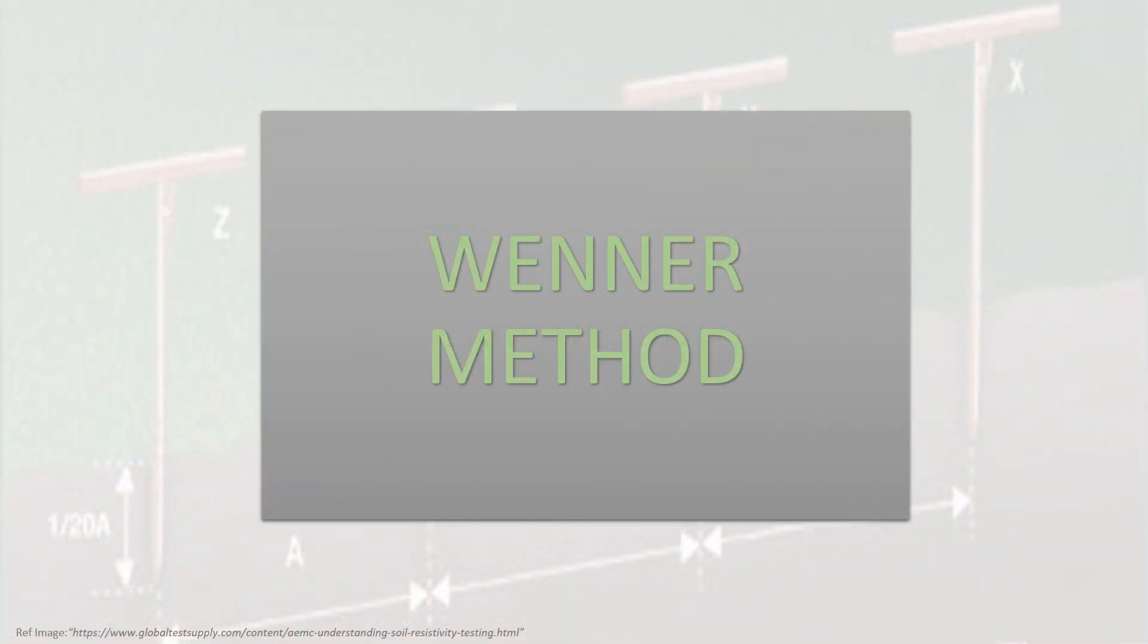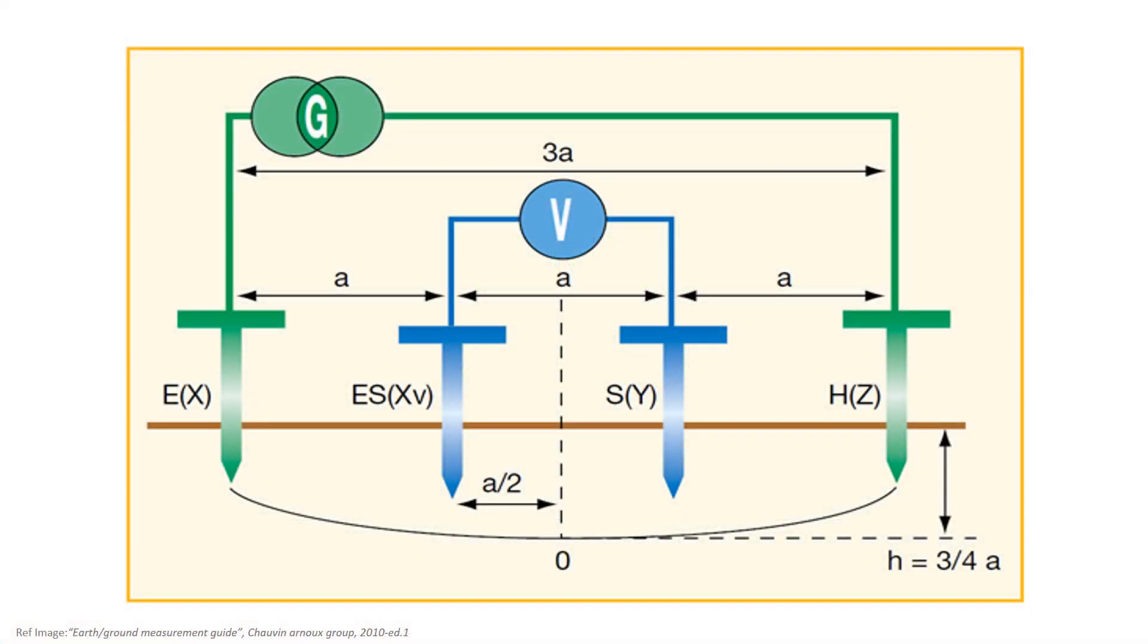Let's start with the Wenner method. Measurement principle of Wenner method is based in four electrodes that are set up in line in the ground, equally spaced at a distance A from another. As we can see here, a generator is used to inject a measurement current between the two outer electrodes, called current electrodes, and we measure the voltage between the two internal electrodes, called potential electrodes.